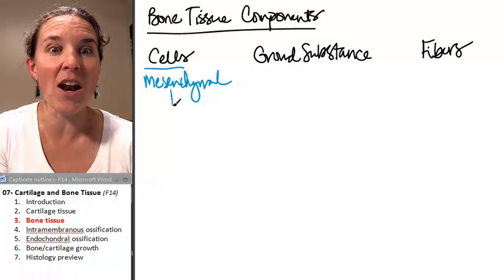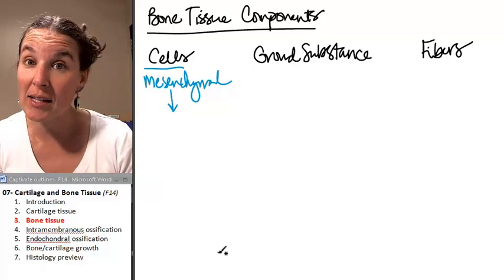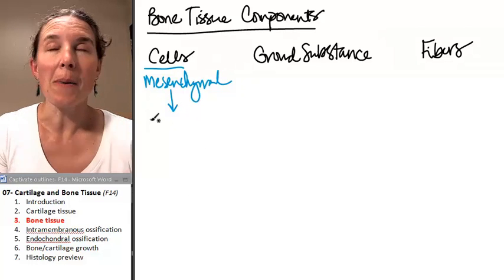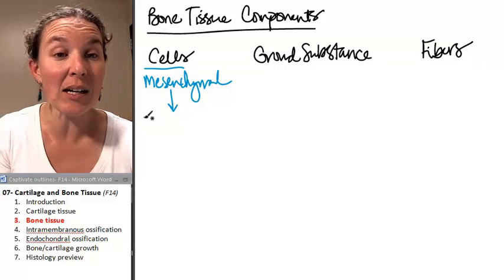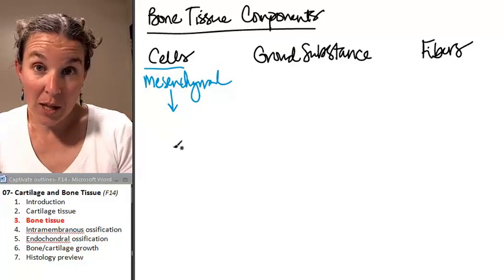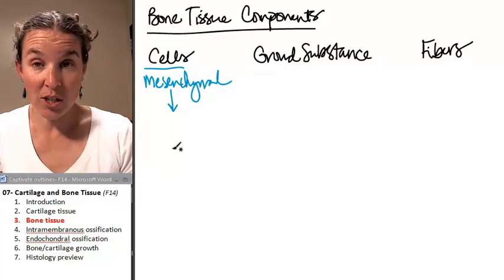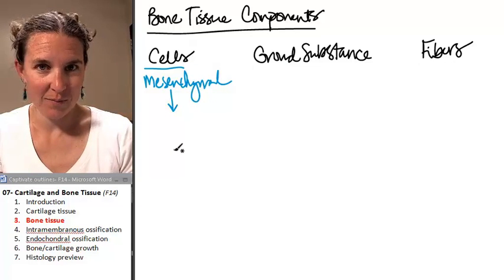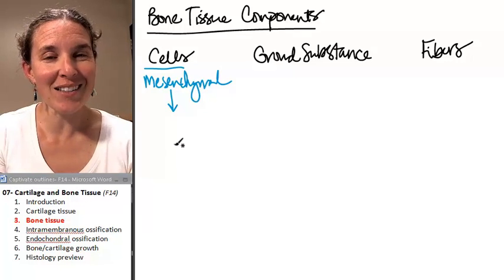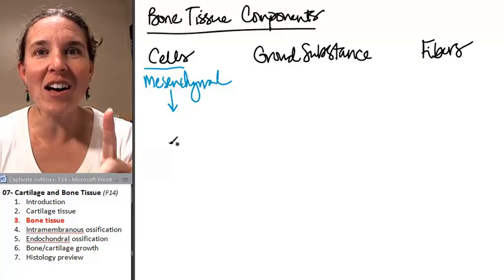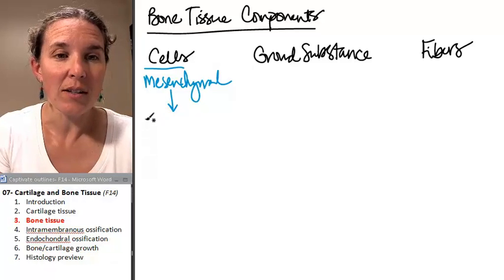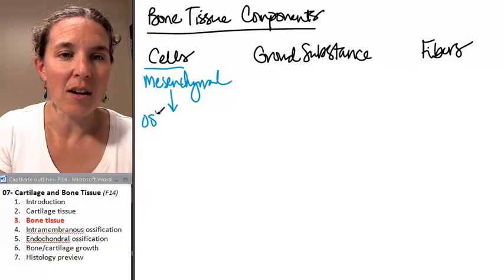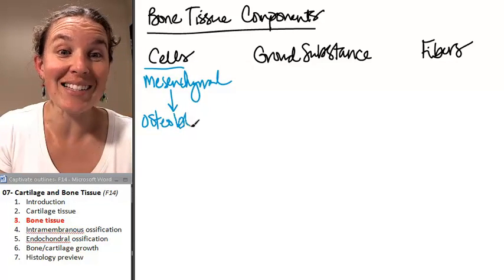Remember, these are the stem cells that are going to give rise to, if the stem cell differentiates, it can become a chondroblast in bone tissue. Chondroblasts are found in cartilage. Osteoblast. Doesn't osteo make you think of bone? Because that's what it means.